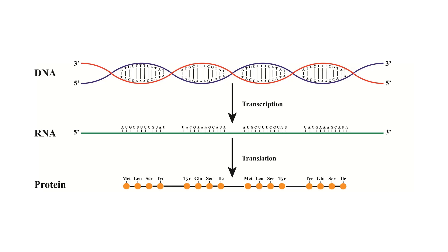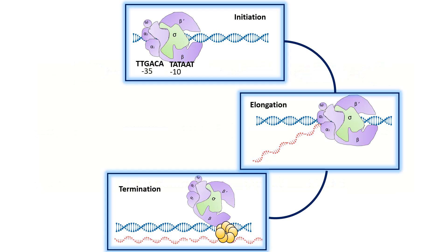The important first step is converting the messages inside the DNA into a genetic blueprint, which is RNA. This step is known as transcription. Transcription in prokaryotes can be seen in three different phases: the first phase is initiation, the second phase is elongation, and the third phase is termination.